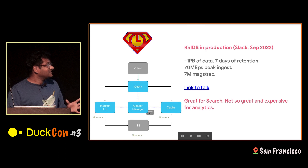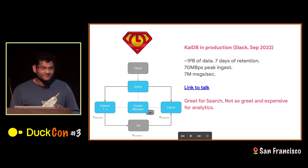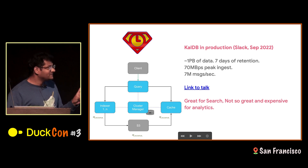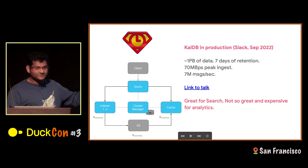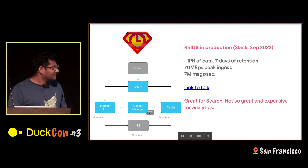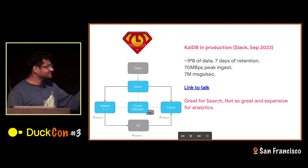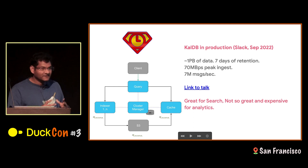CalDB was, at least as of September last year when I was at Slack, managing about a petabyte of data across three clusters. We were doing seven days of retention for the log data and ingesting around 7 million messages per second at peak. The problem with CalDB, at least as of today, is that because it uses Lucene, it's great for search and lightweight analytics, but it's not so great for heavy analytics — it's expensive and slow.